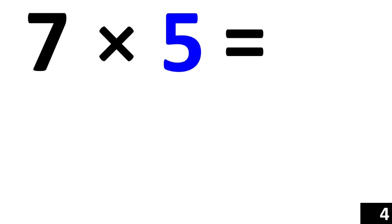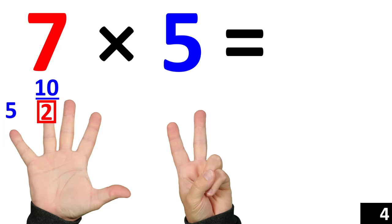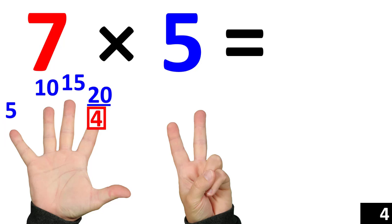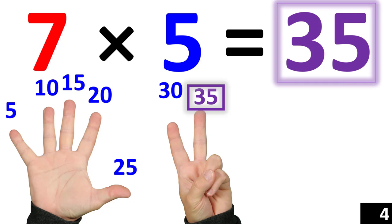7 times 5 is the same thing as counting by 5 seven times. 5. 10. 15. 20. 25. 30. 35. Therefore 7 times 5 is equal to 35.